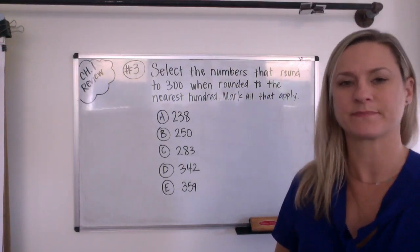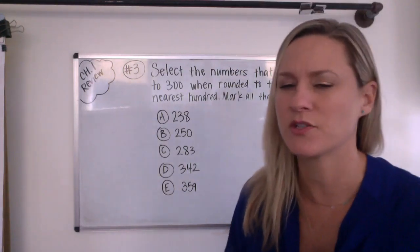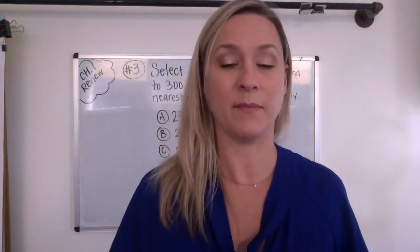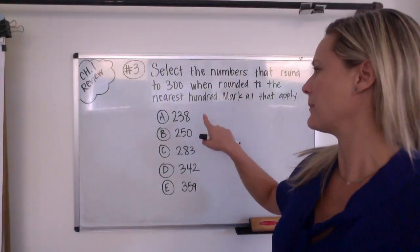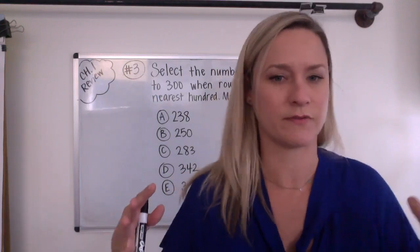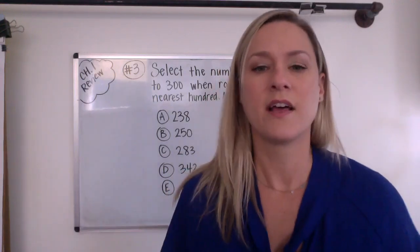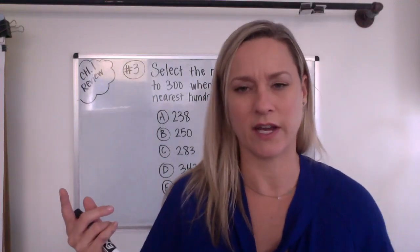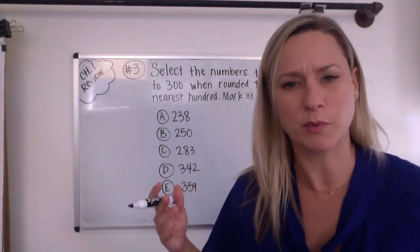Select the numbers that round to 300 when rounded to the nearest 100. Mark all that apply. Okay, so we're going to do some rounding. And my favorite way to round is on a number line, because number lines just really make sense to me. If they don't make sense to you, see if you can figure out what I'm doing here with the number line. All right, so let's see. If I were to count by hundreds, 100, 200, 300, 400, 500, 600, so on, those would be nearest hundreds, right? When we're thinking about multiples of 100.